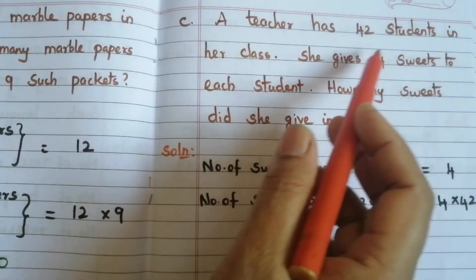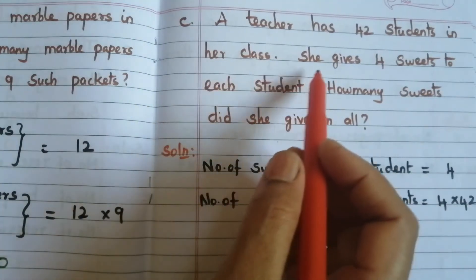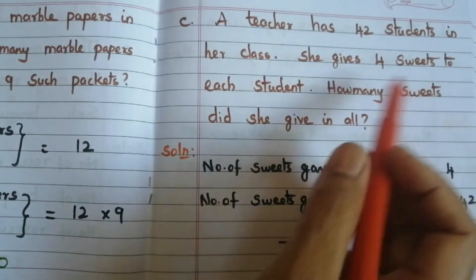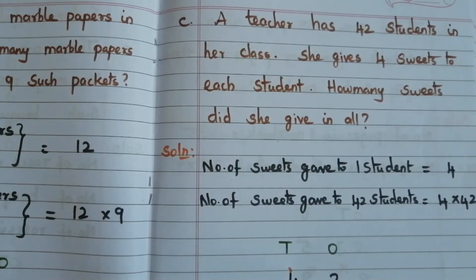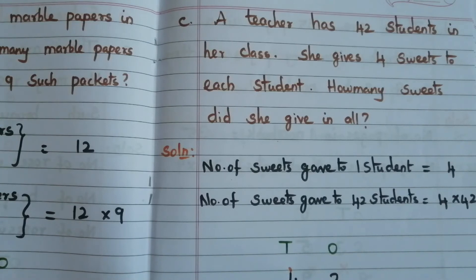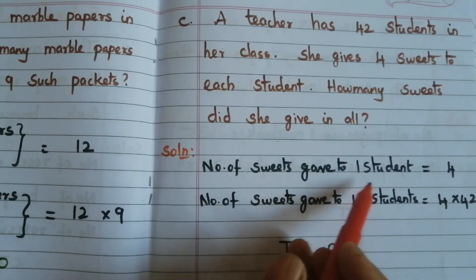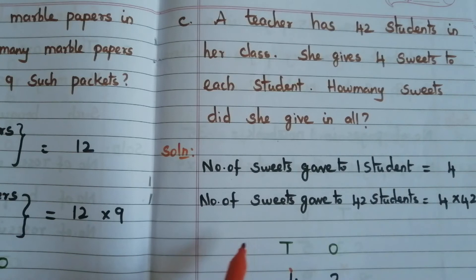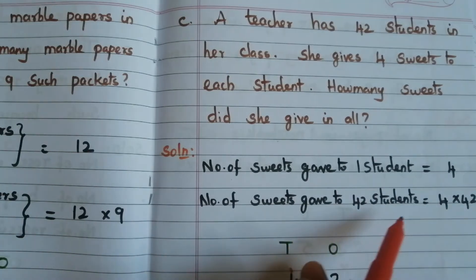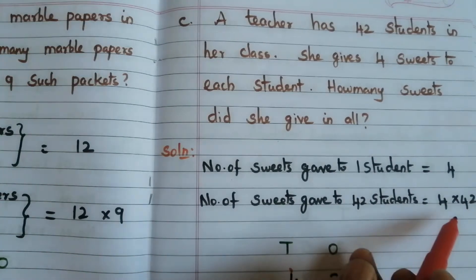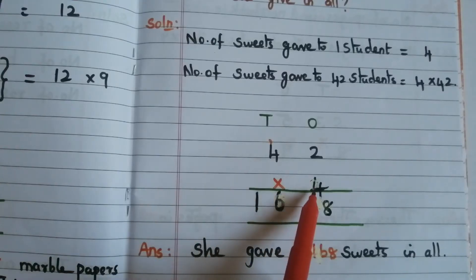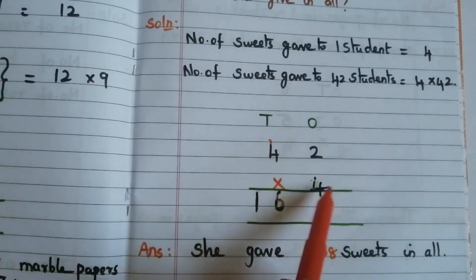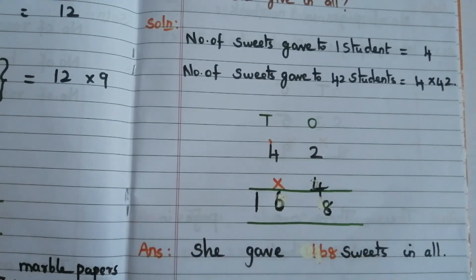C: A teacher has 42 students in her class. She gives 4 sweets to each student. How many sweets did she give in all? Number of sweets given to 1 student = 4. Number of sweets given to 42 students = 4 × 42. Start from ones place: 4 twos are 8, 4 fours are 16. She gave 168 sweets in all.